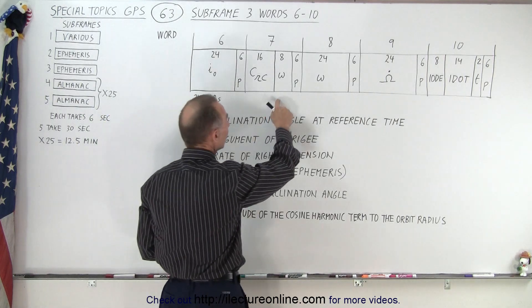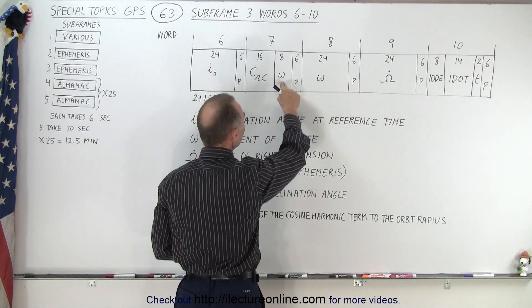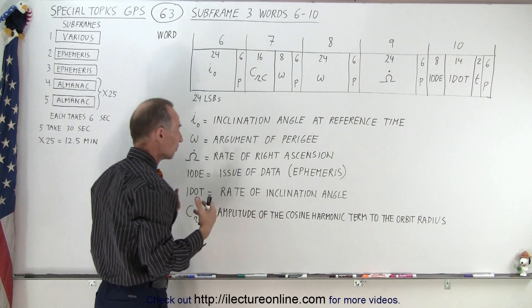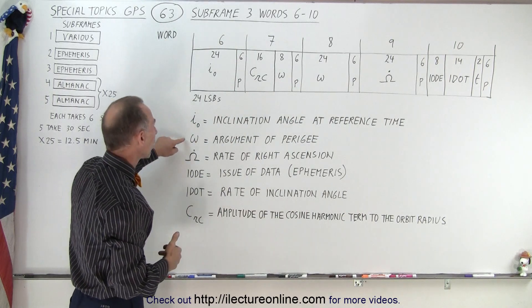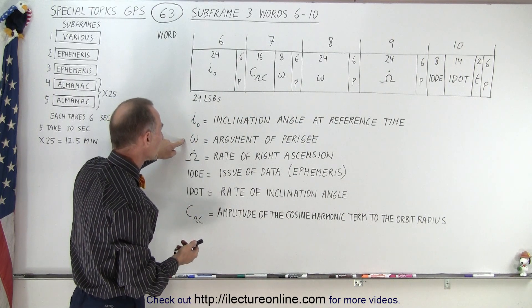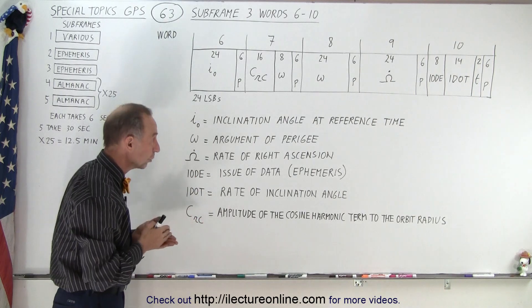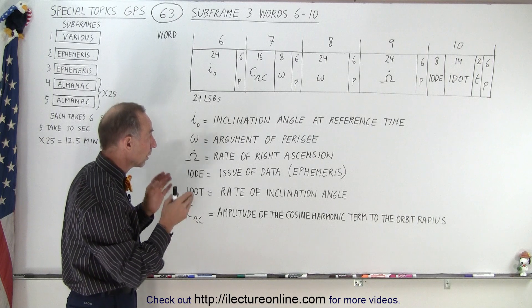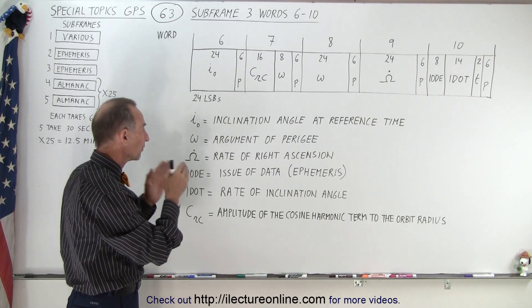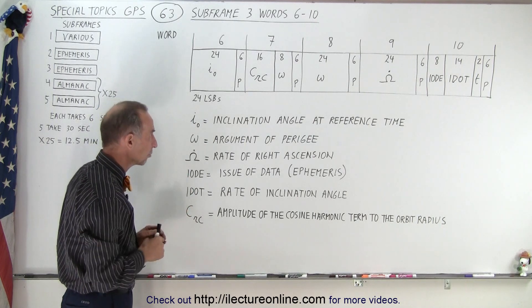In word 7 and word 8, we have a total of 32 bits. Again, we need a lot of bits there to contain the argument of the perigee. So perigee is the position of the satellite when it's closest to the Earth, and therefore we want to know what the argument of that perigee is, where exactly that is located.